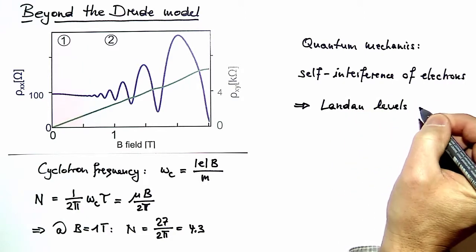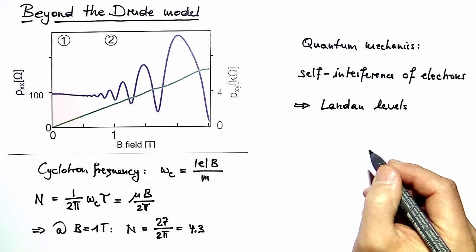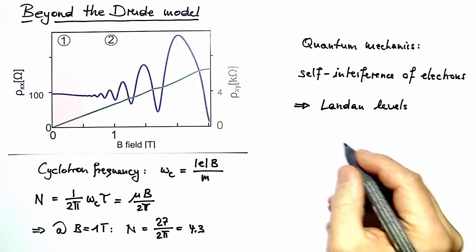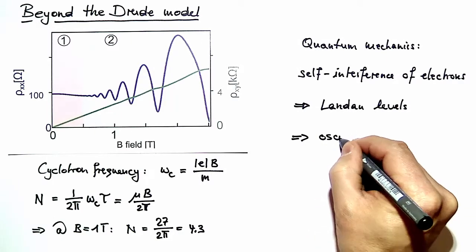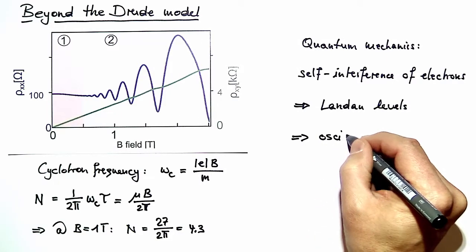And these Landau levels, which go beyond the description of Drude, would lead to this oscillatory magnetoresistance features seen in the measurement.